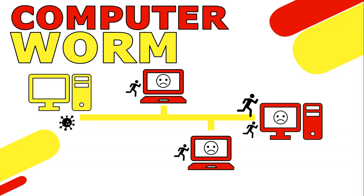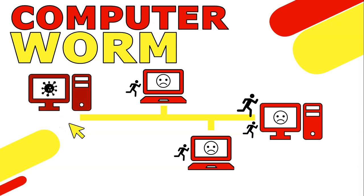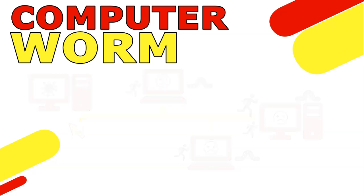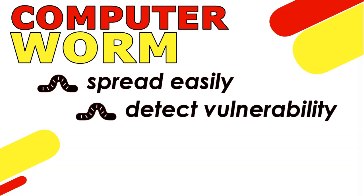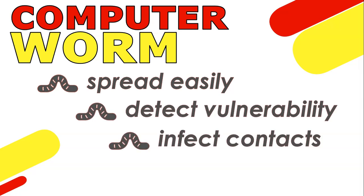A virus will stay dormant until you execute it, bringing it to life, while a worm does not rely on you to trigger it as they are self-sufficient programs. Once it is on your system, it can spread around without human interaction. Worms tend to be more damaging than viruses because they can spread so easily. They can detect any device with a vulnerability or infect your email contacts.